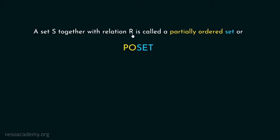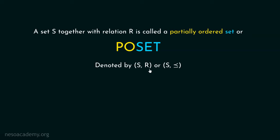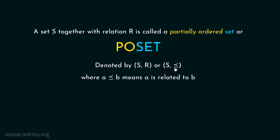A set S together with relation R is called a partially ordered set or POSET — it is a short form of partially ordered set, where P means partially, O means ordered, and 'set' means set. It is denoted as (S, ≤), and sometimes we use this symbol to denote relation R. It looks like a less than or equal to sign, but it is not — it is just a replacement of relation R. We can use ARB and A ≤ B interchangeably; they both mean the same.